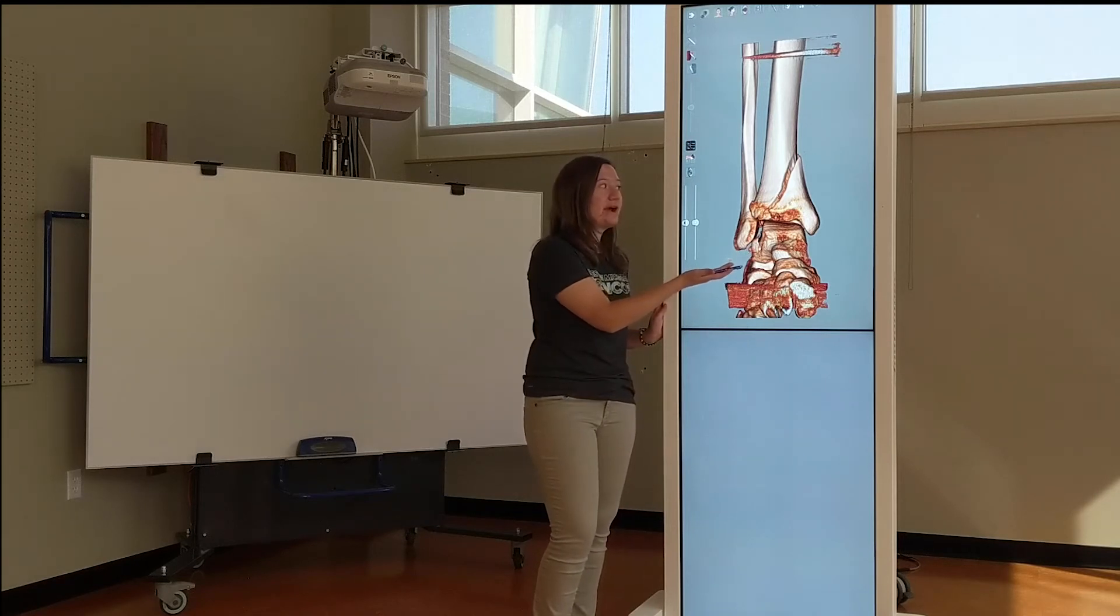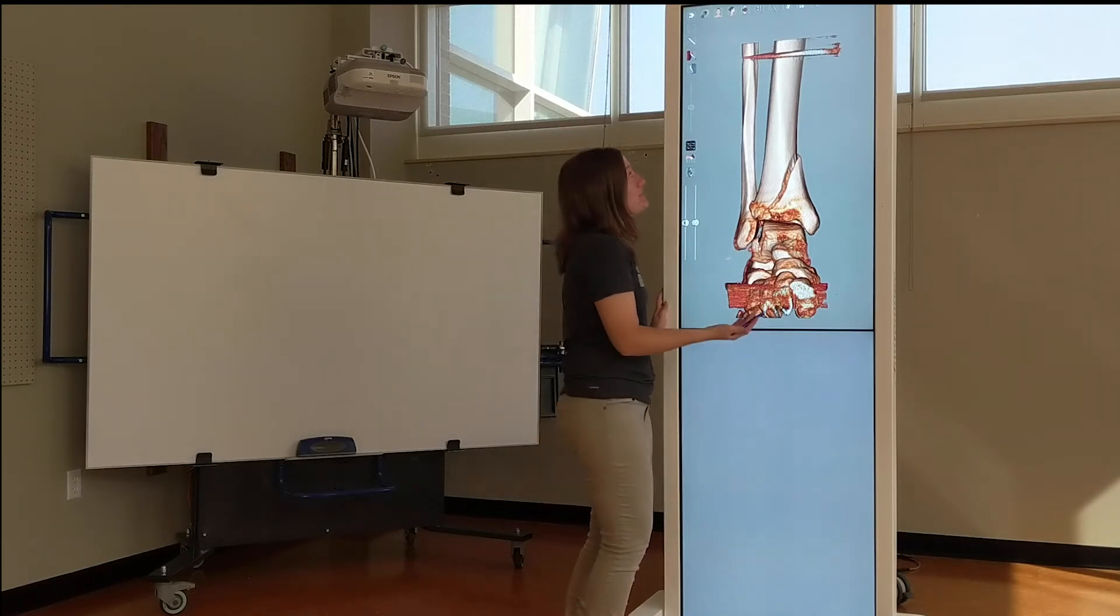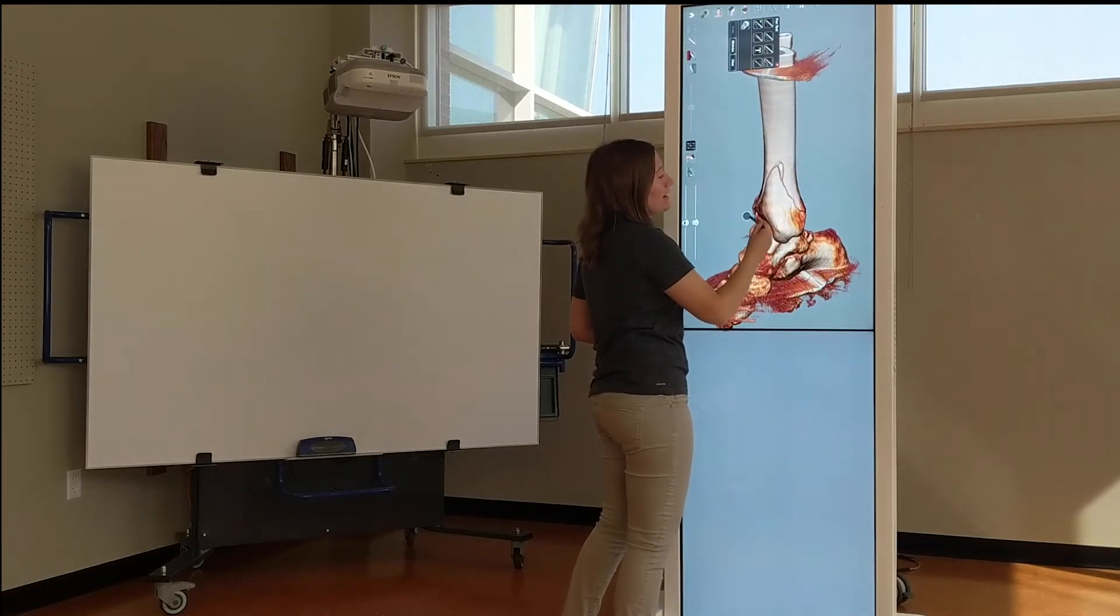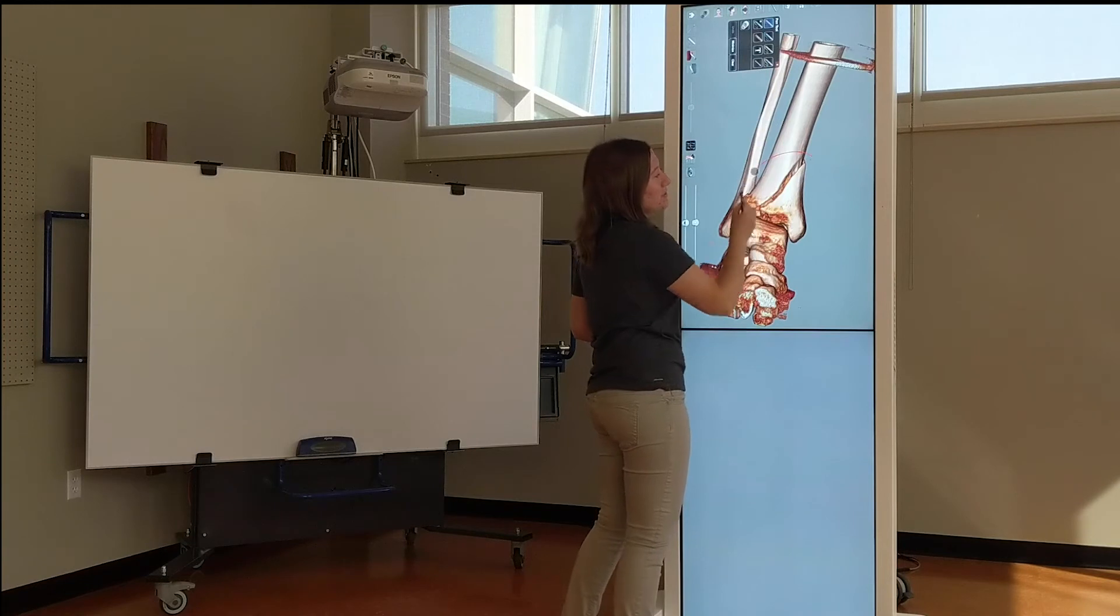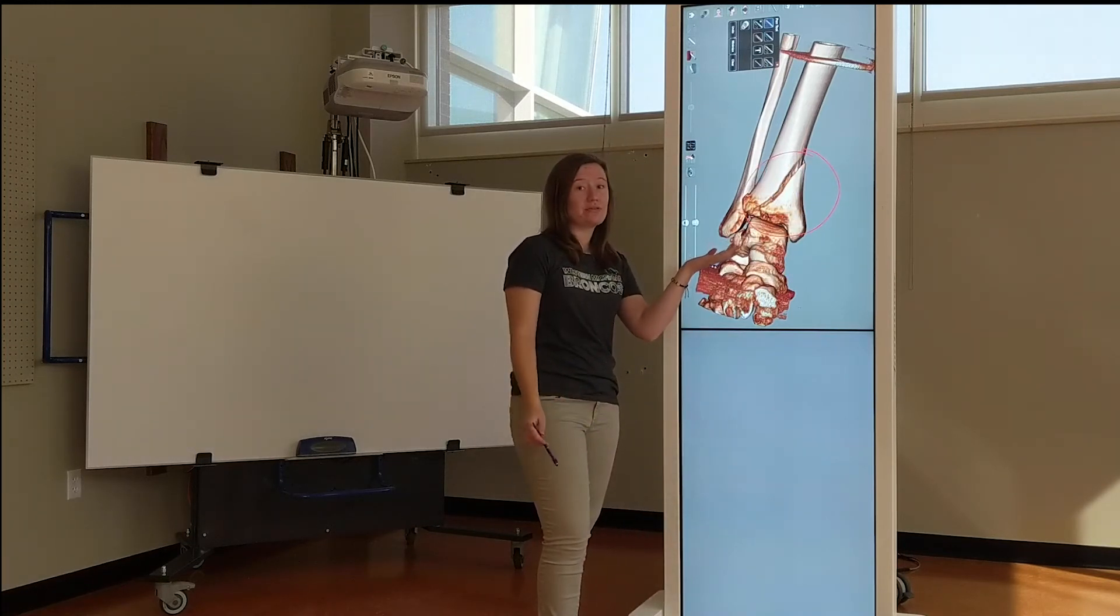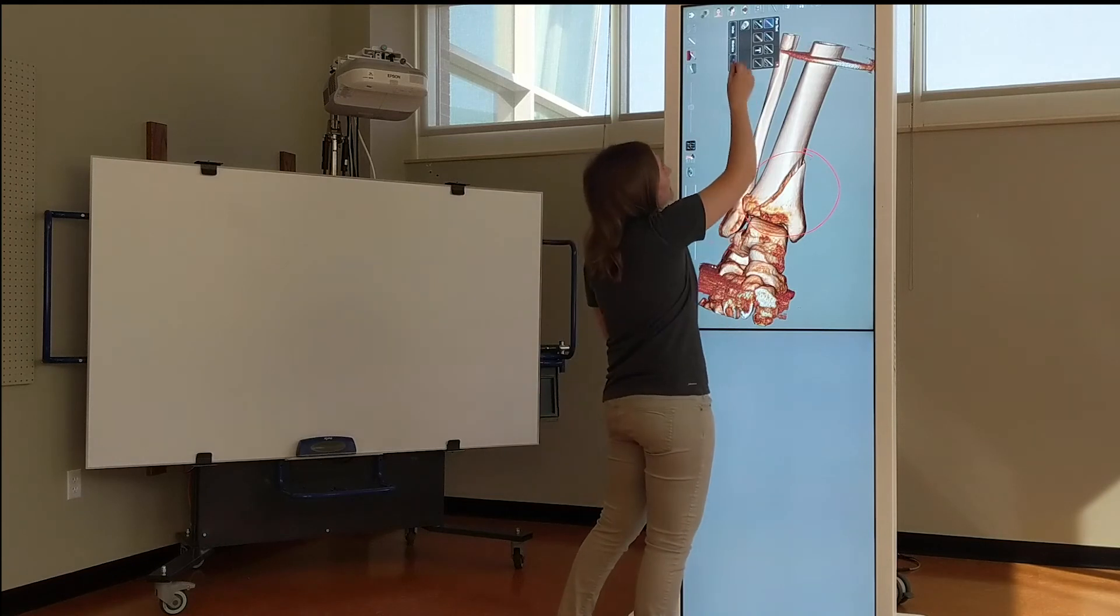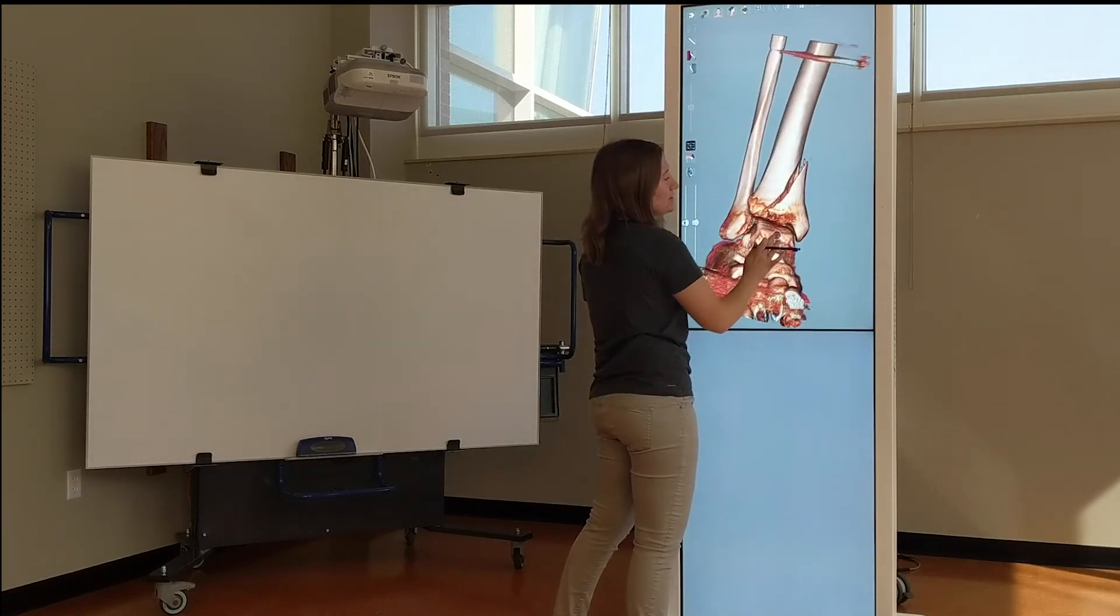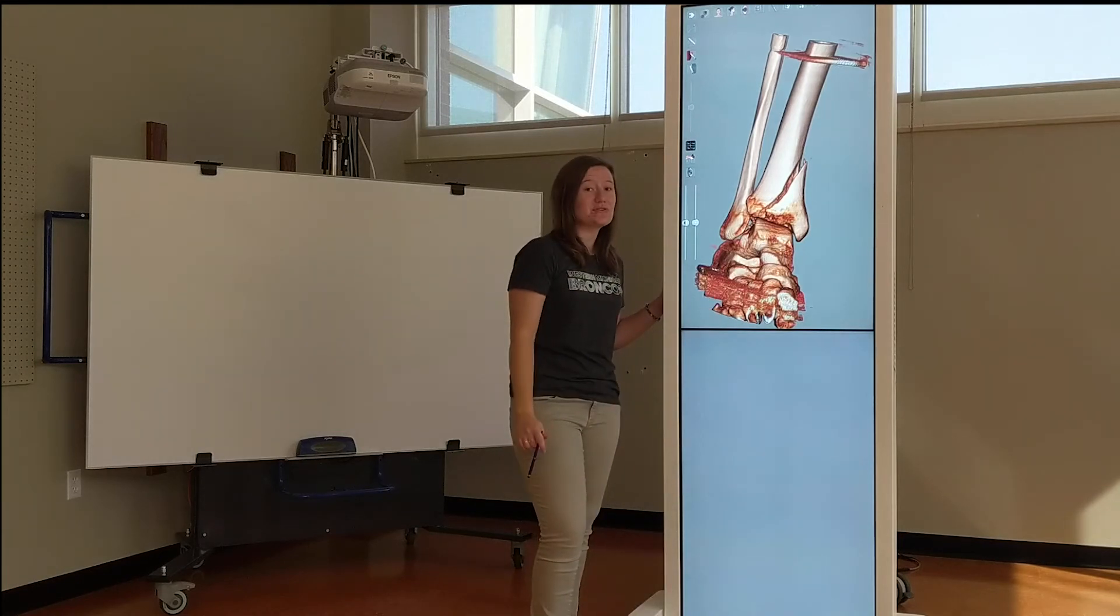Here is an ankle fracture. What's nice about the table is you can draw on it and you can move it around. So I've drawn a circle around the fracture. You can also undo that or move it around so that you can see it. This is really useful for studying.